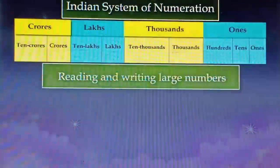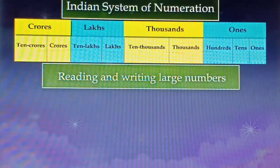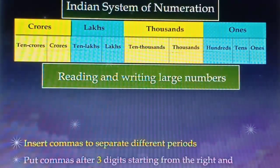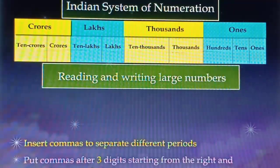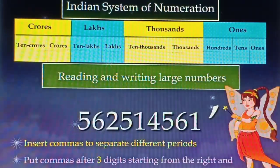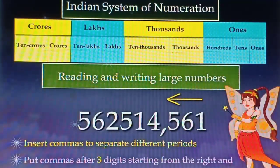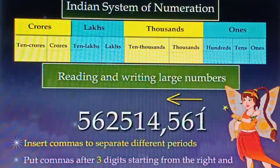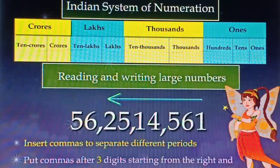Now, let us learn to read and write large numbers using this system. First, we need to insert commas to separate different periods. Put commas after three digits starting from the right and then after every two digits. For example, to read this number, the first comma is put after the ones period, which means after three digits from the right. In this case, it is after this five. Accordingly, in the case of the thousands and lakhs period, we put commas after every two digits, that is, after one and after two as shown.